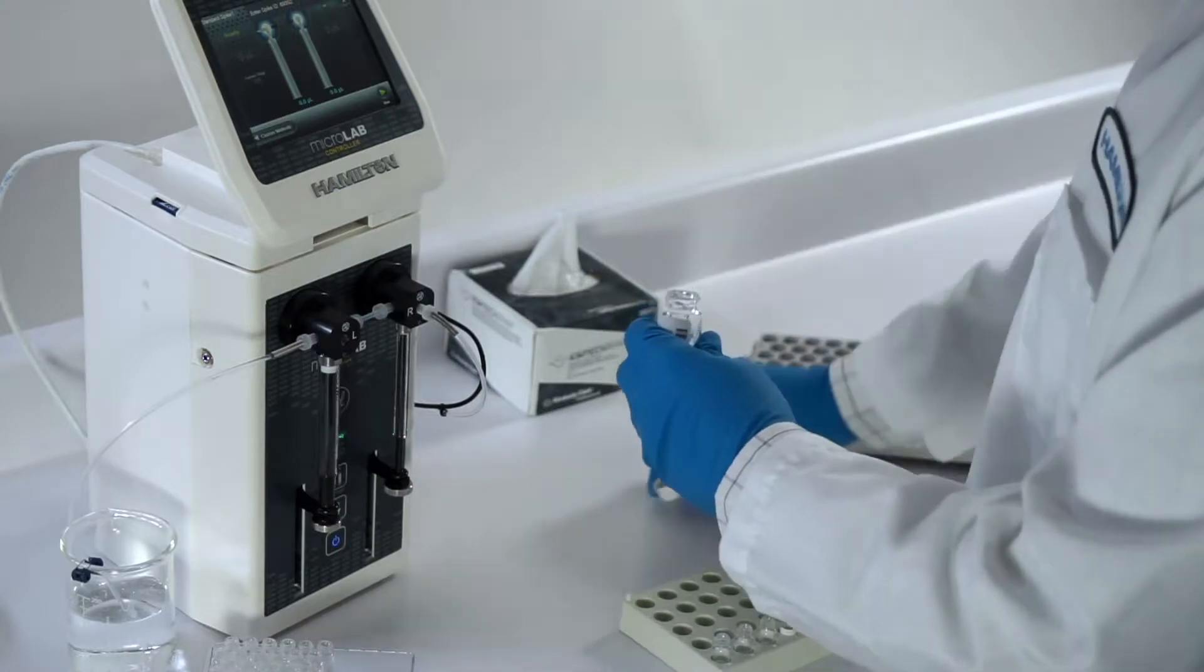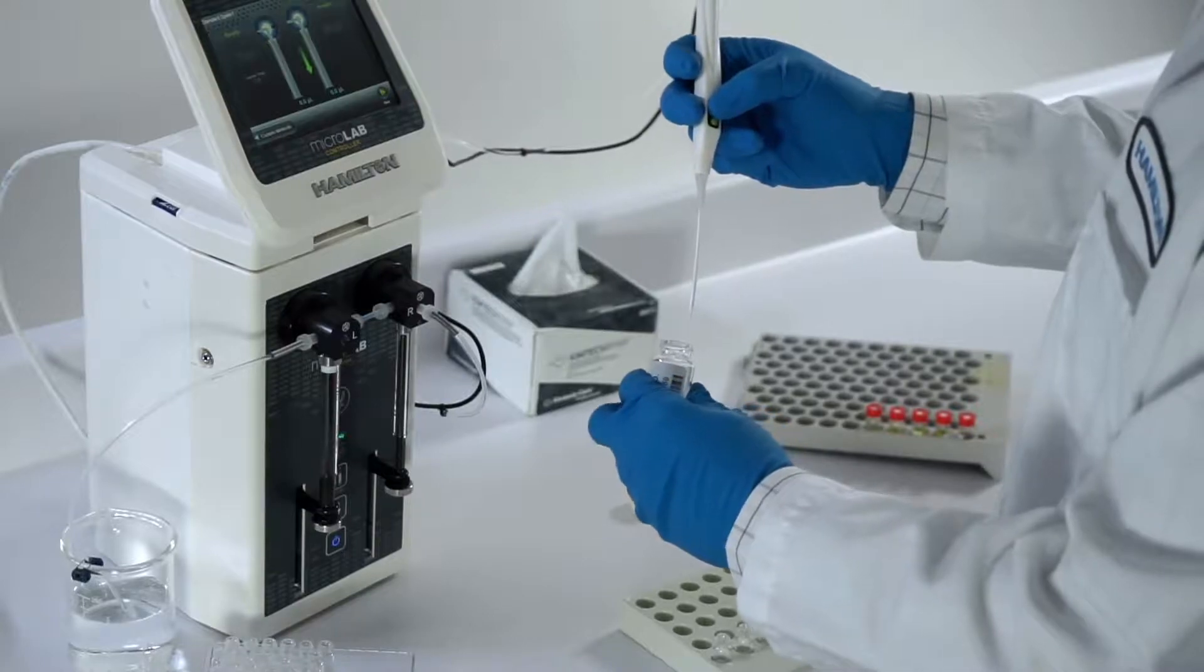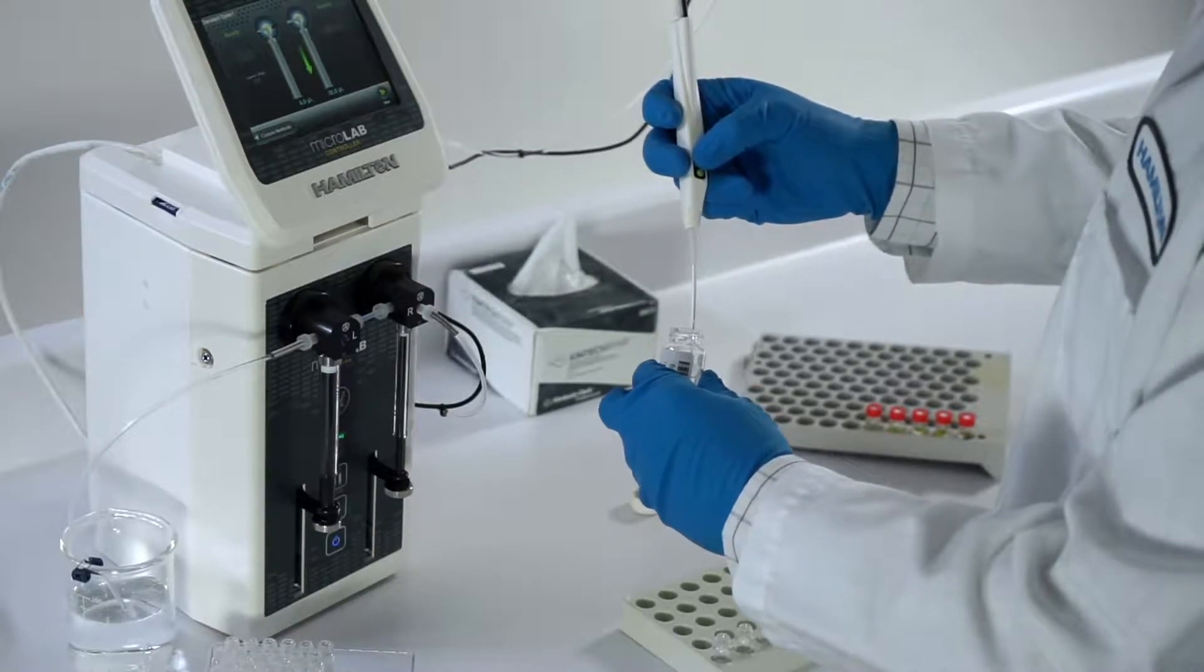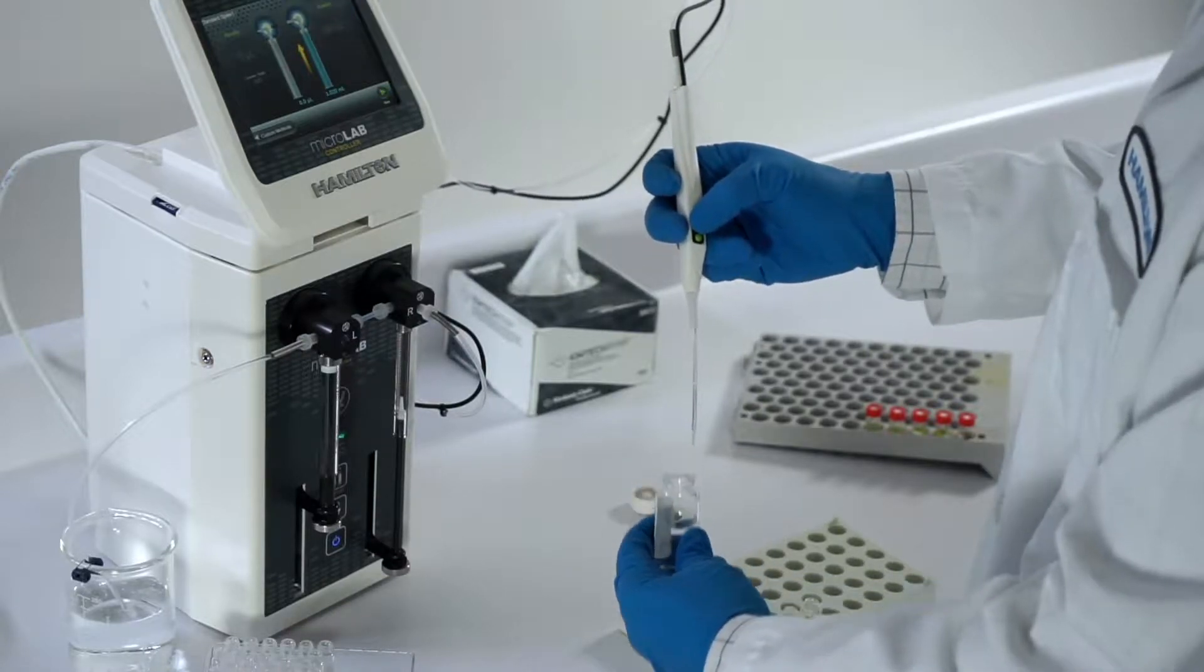For spiking, the total volume of the internal standard is aspirated into the hand probe. Then it can be precisely aliquoted into each vial with unknown sample.